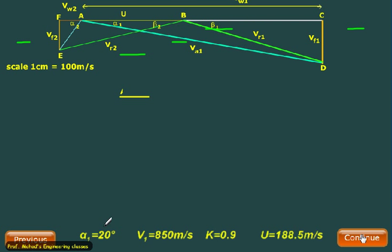So we have data like this: alpha_1 is 20°, V_1 is 850 m/s, K equal to 0.9, and u is equal to 188.5 m/s.